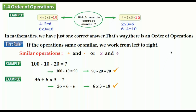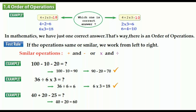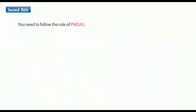One more example: 40 plus 20 minus 25. We have addition and subtraction — these are similar operations, so we work from left to right. 40 plus 20 equals 60. Then 60 minus 25 equals 35. That's it.